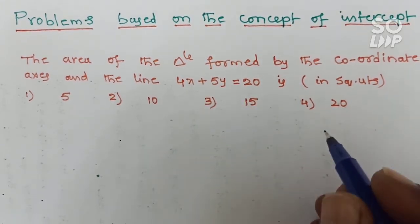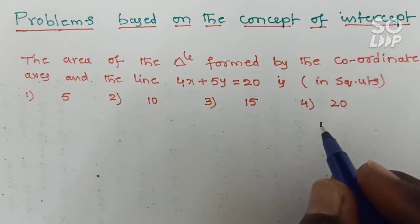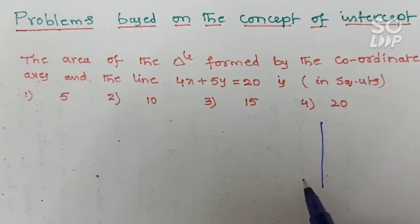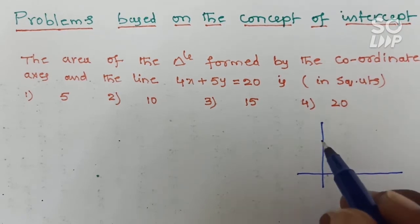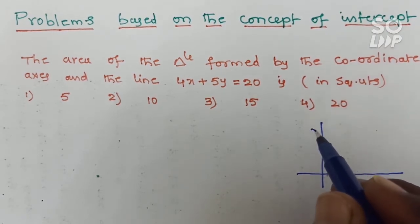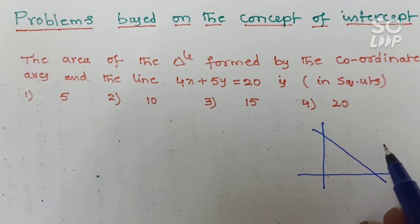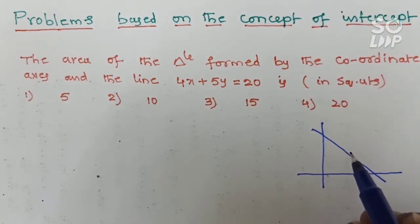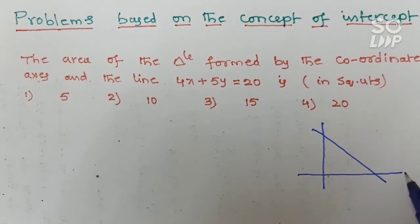What is that meaning? The triangle is formed by the coordinate axis and the given line. This problem we can do in two methods: a direct shortcut method or a traditional method.